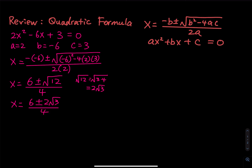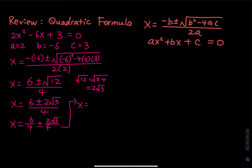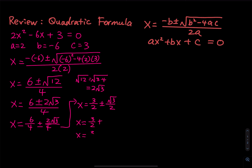We can break this down into two fractions: x equals 6 over 4 plus or minus 2 over 4 times the square root of 3. We keep the square root on top. Dividing top and bottom by 2, we get x equals 3 over 2 plus or minus root 3 over 2. This gives two solutions: x equals 3 over 2 plus root 3 over 2, and x equals 3 over 2 minus root 3 over 2.